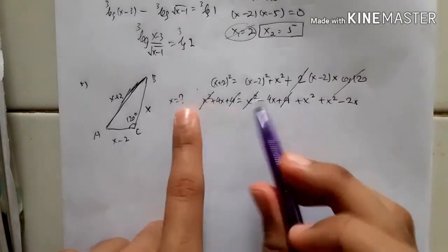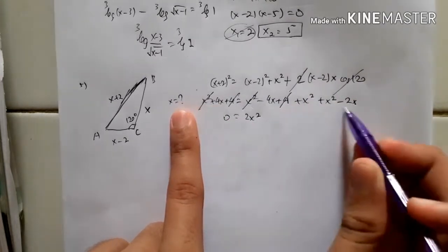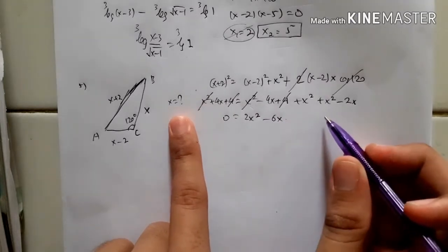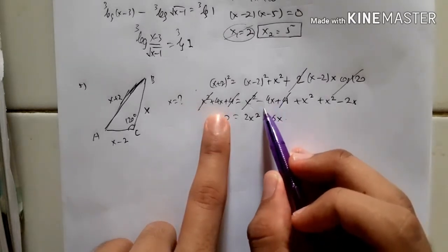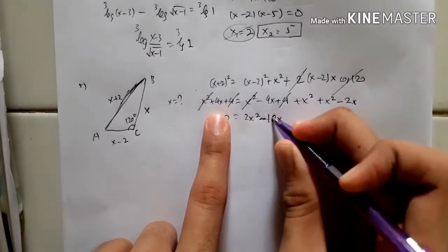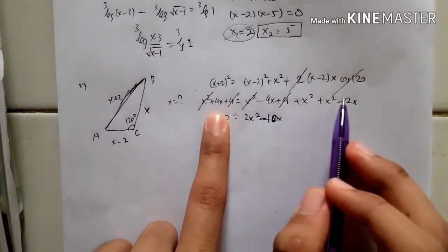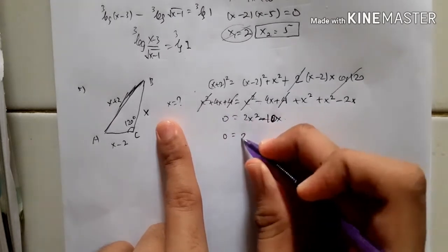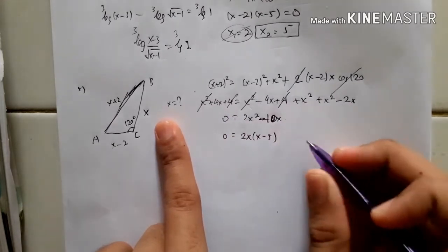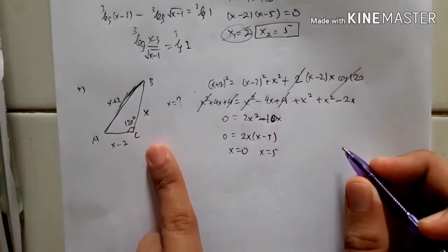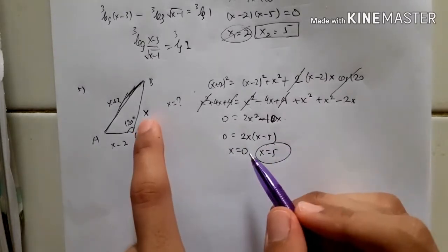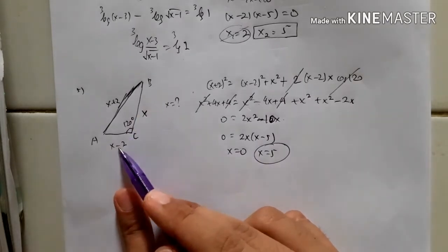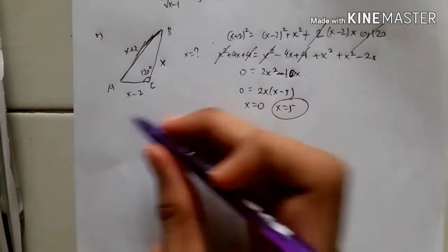That gives us 2x squared minus 6x — sorry, it's minus 10 — because minus 4 minus 2 then minus 4. So this factors as 2x(x minus 5), meaning x is either 0 or x is 5. Of course x is 5, because it is impossible for the triangle to have a side value of 0 or negative. So that is for number 5.